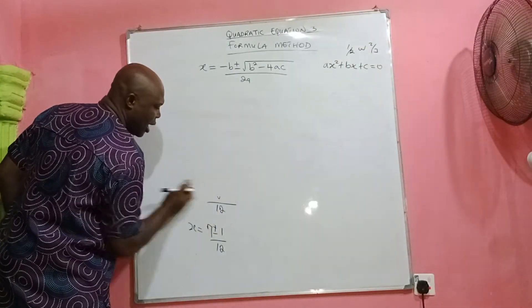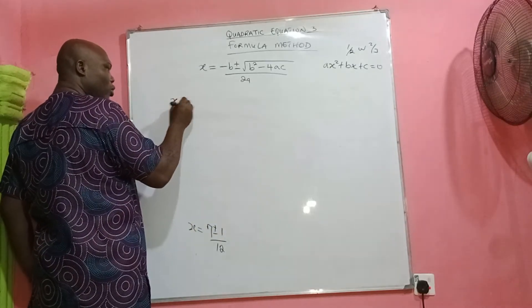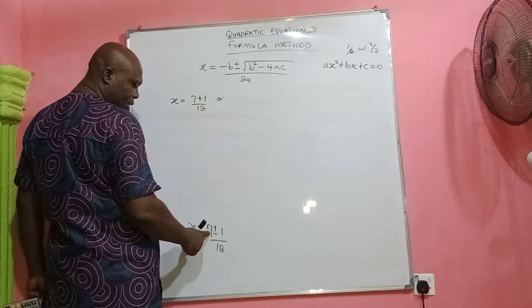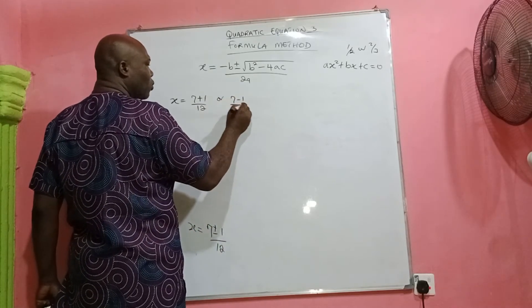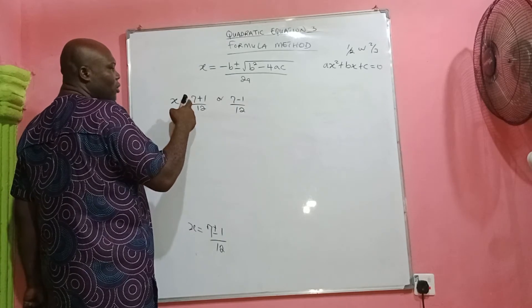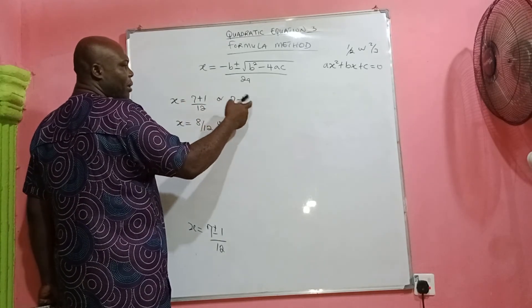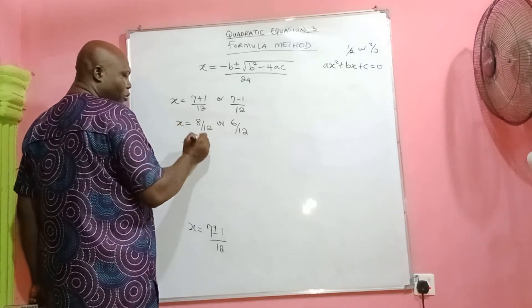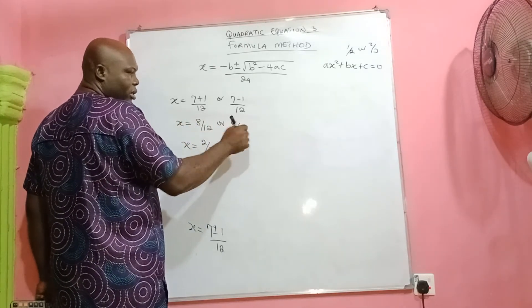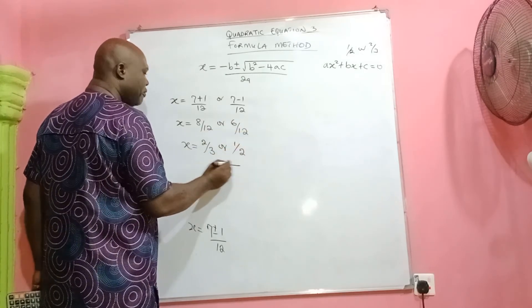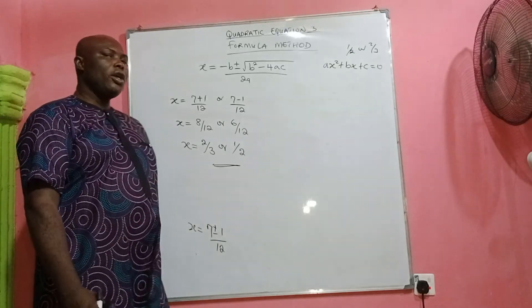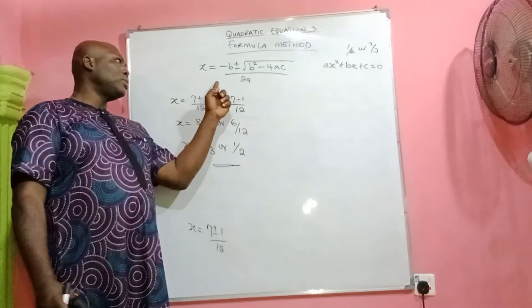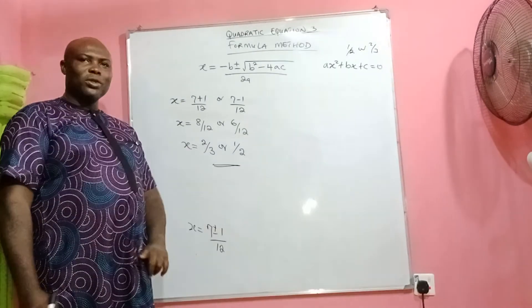At this point, x = (7 + 1)/12 or (7 − 1)/12. That gives us 8/12 or 6/12. Reducing to lowest terms: 8/12 = 2/3, and 6/12 = 1/2. The roots of the equation are therefore 2/3 or 1/2. So whatever example we take, as long as you know the values of a, b, and c and substitute them into the almighty formula, you will see how easily the roots are obtained.